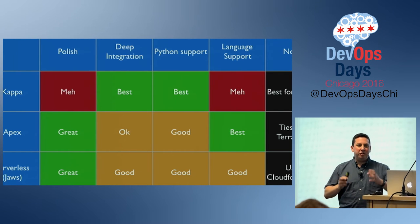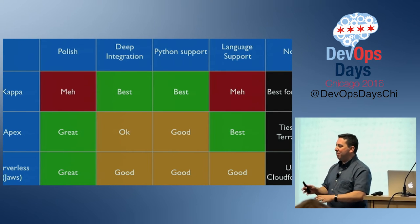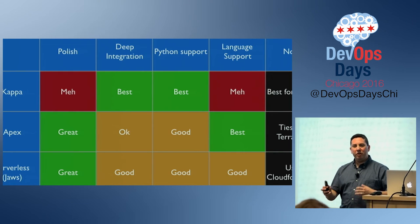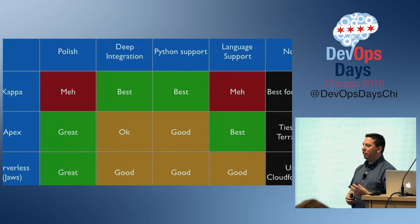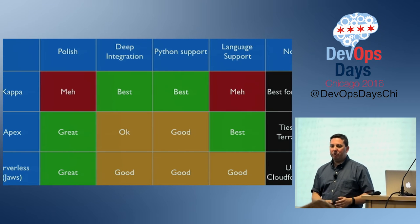If you're going to do just Python on AWS, Kappa is probably going to be a good choice. But if you're going to do other languages or intermix with other infrastructure, Apex is really cool — I've used that one as well.